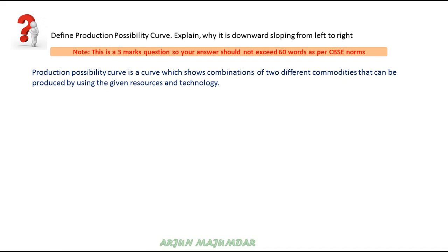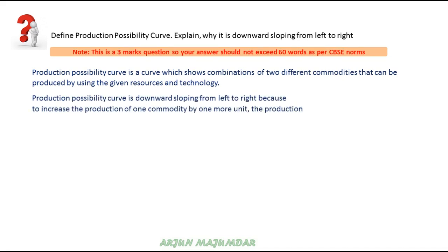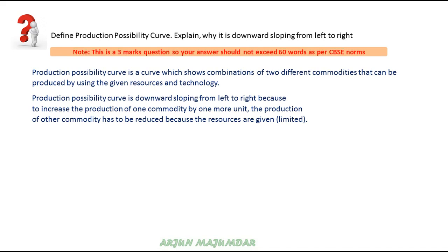Now for the reason why the PPC is downward sloping: the two commodities are produced with limited resources, and all resources are fully used. So to increase the production of one commodity, we have to reduce the production of the other. This is why the PPC is downward sloping. In your 60-word answer, give the definition and then clearly state this downward sloping reason.